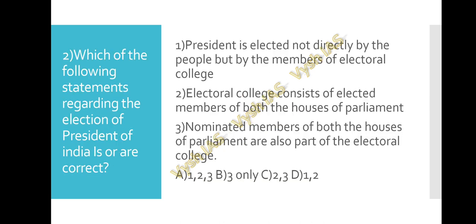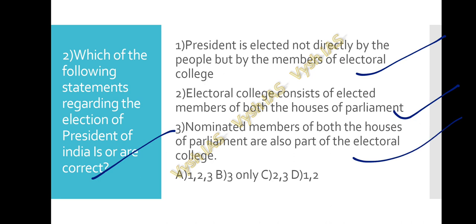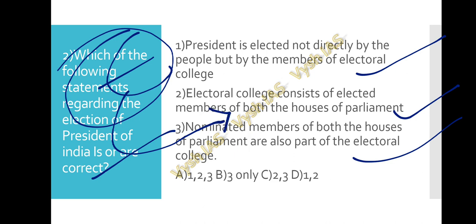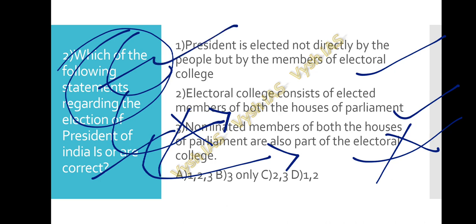Question number two: Which of the following statements regarding the election of the President of India is or are correct? Statement 1: The President is elected not directly but by the members of the Electoral College. Statement 2: The Electoral College consists of elected members of both Houses of Parliament. Statement 3: Nominated members of both Houses of Parliament are also part of the Electoral College. Nominated members are absent from the Electoral College, so Statement 3 is wrong. Statements 1 and 2 are correct, so option D is the answer.